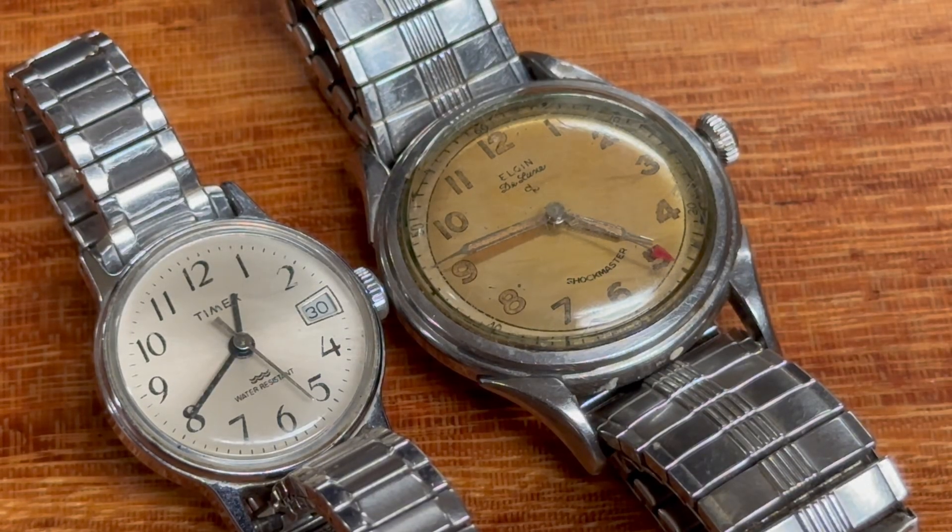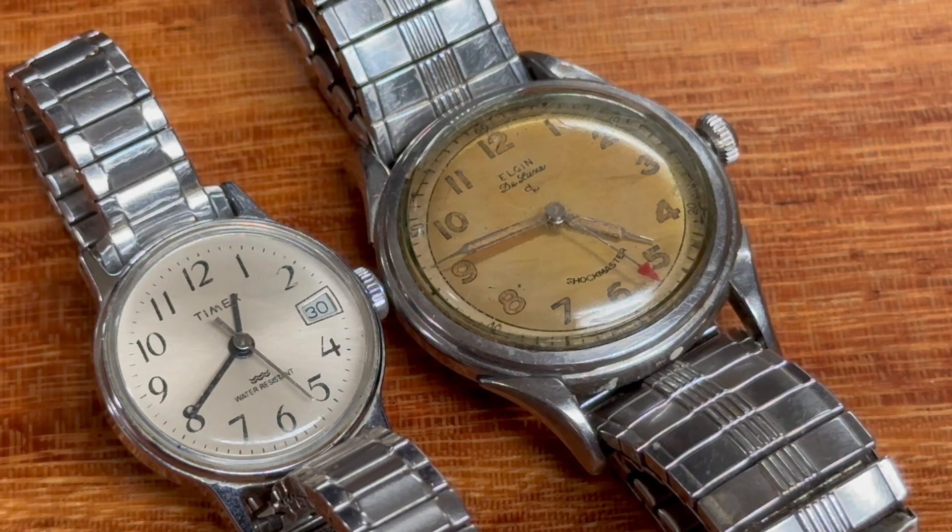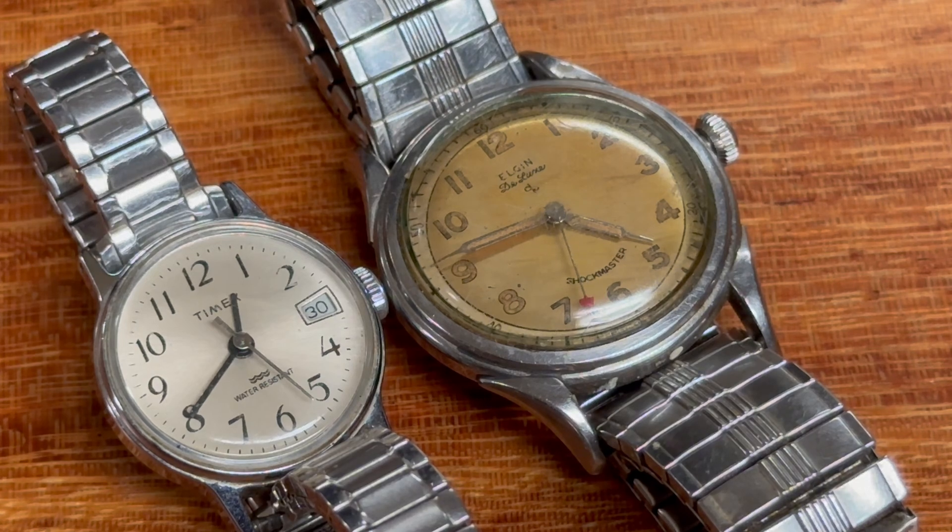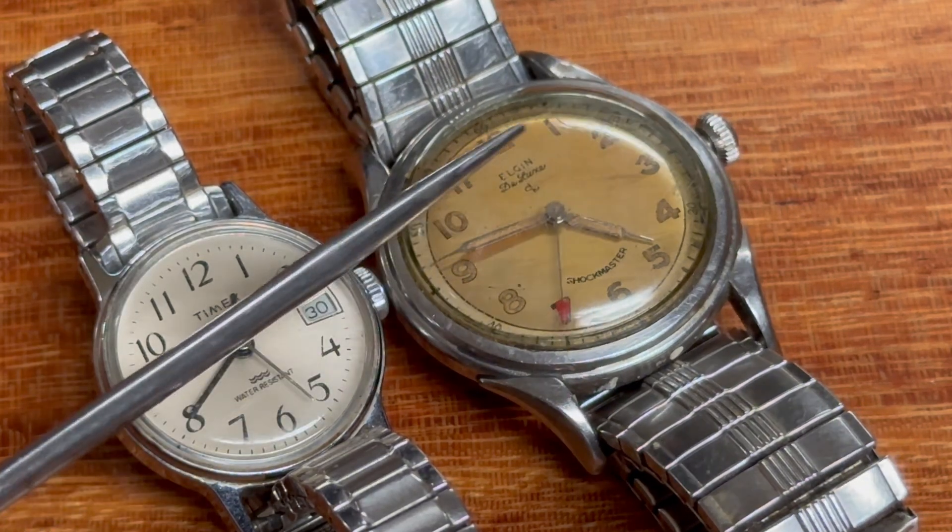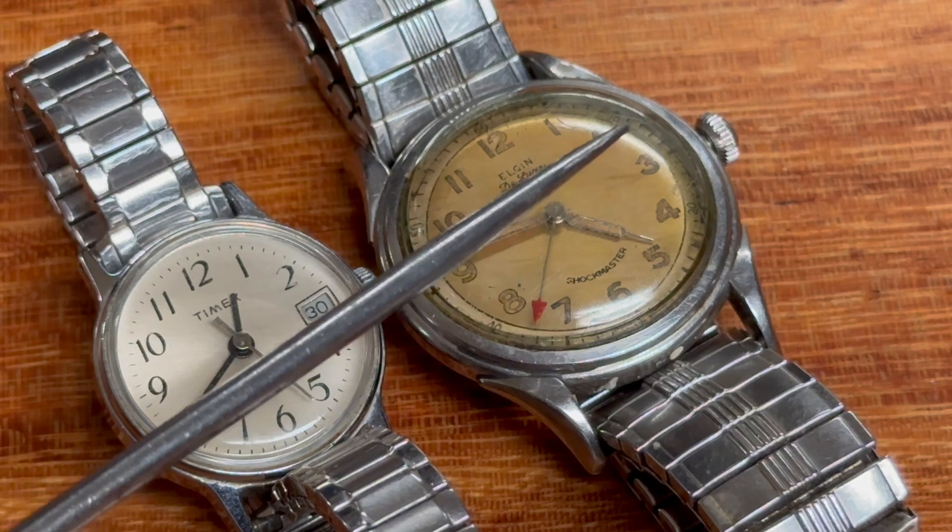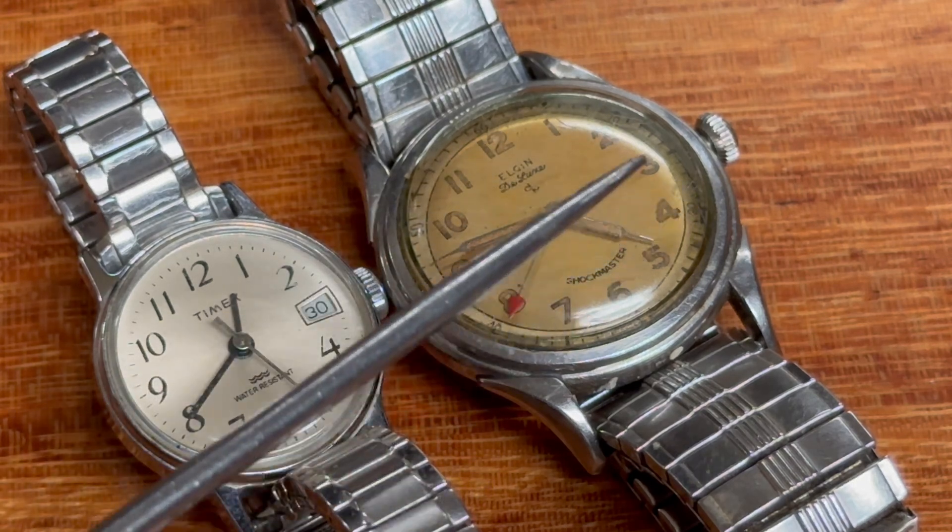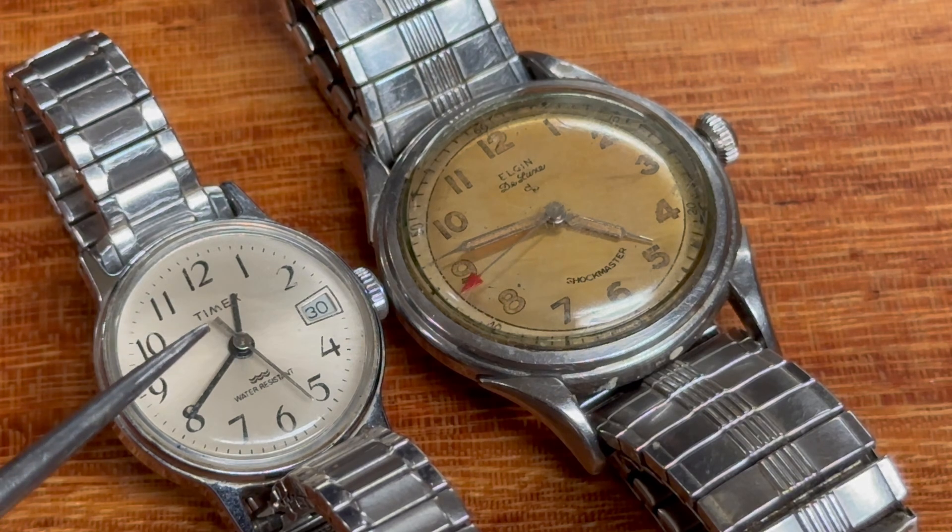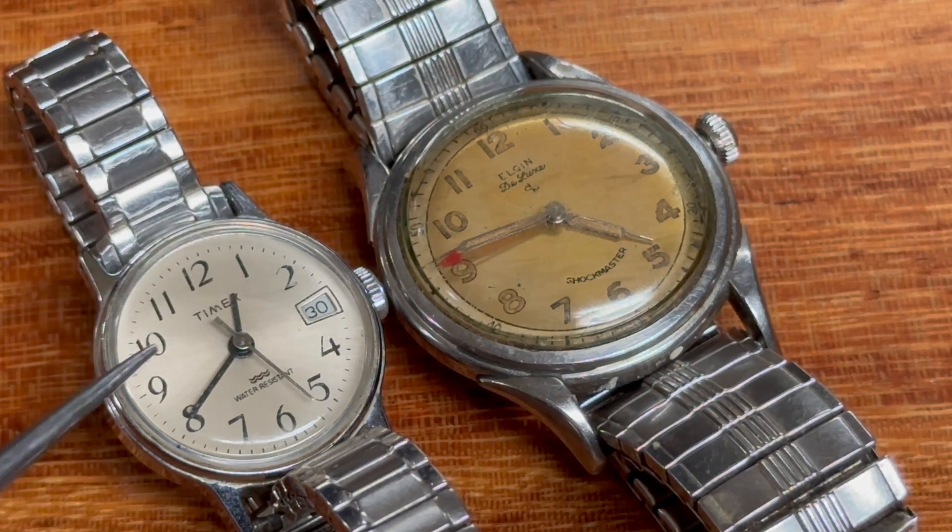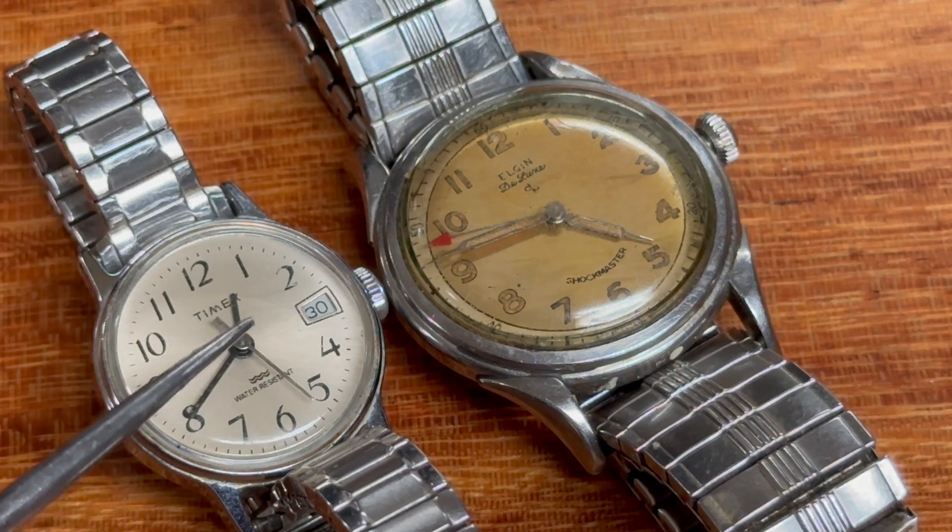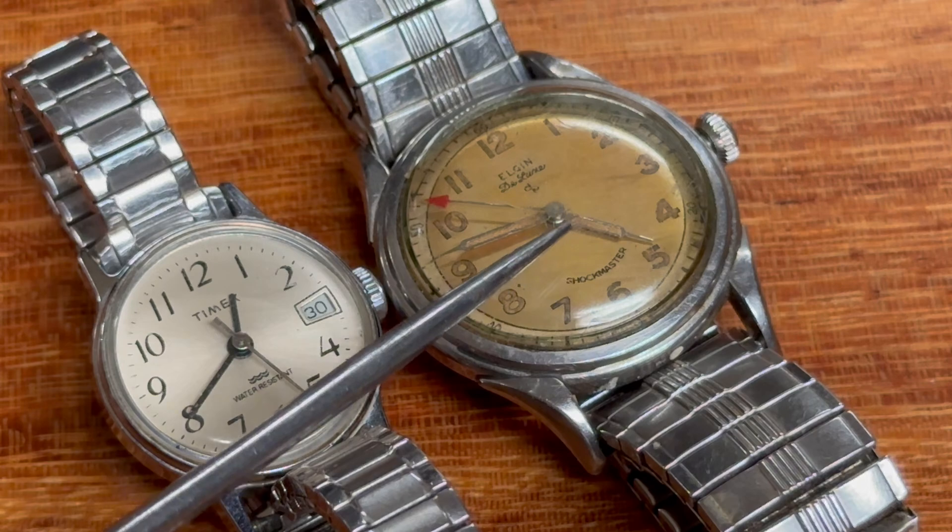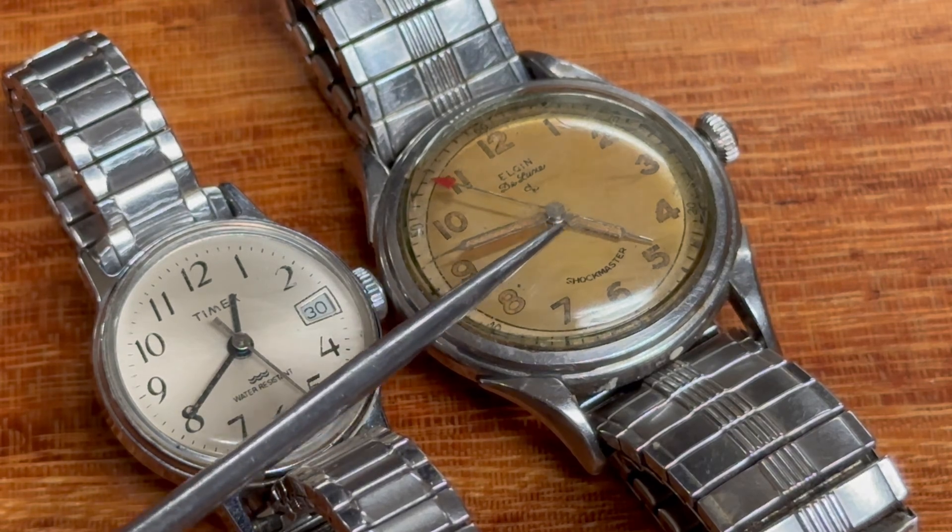If you're ever at an estate sale, a pawn shop, antique store, anything like that, and you're looking at watches, one of the telltale signs of a radium-faced watch is the browned lens. The radiation coming from the radium tends to turn the lens brown or dark, and here's a watch next to it that is slightly newer. Although if it had a radium dial, it too would have a discolored lens. So this is a classic sign. You'll even see this on some alarm clocks as well.